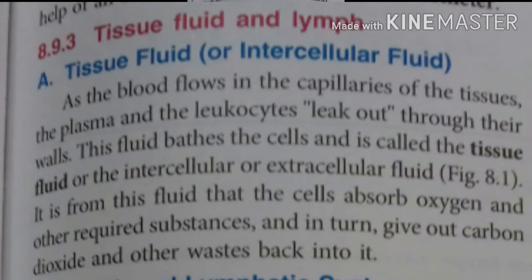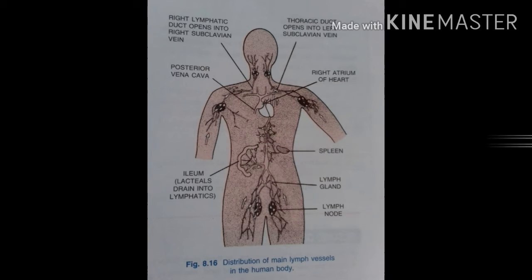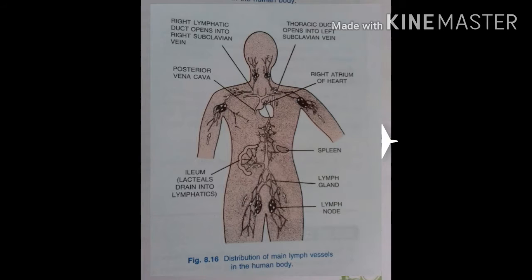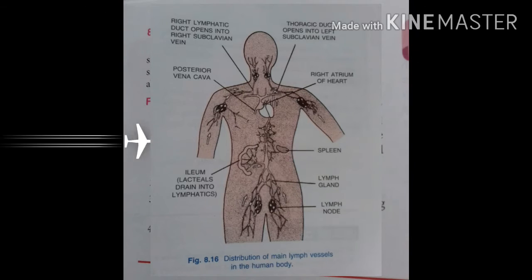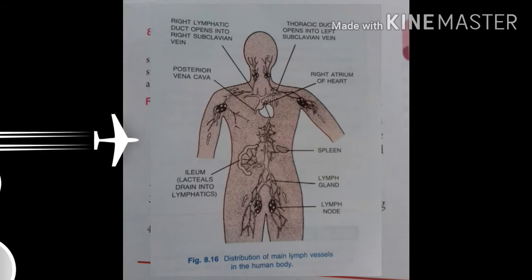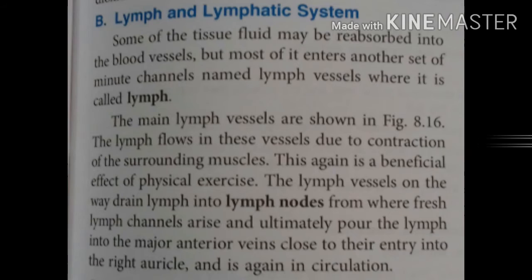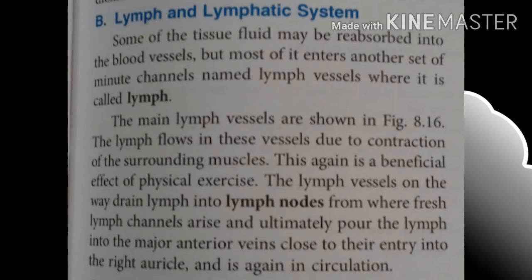Some of the tissue fluid may be reabsorbed into blood vessels, but most of it enters another set of minute channels called lymph vessels, where it is called lymph. In the lymphatic system, lymph flows into the circulatory system and then into the blood flow. Lymph is a yellowish or white colored liquid which only contains WBCs. RBCs are not found in lymph, which is why it appears yellowish or white in color.